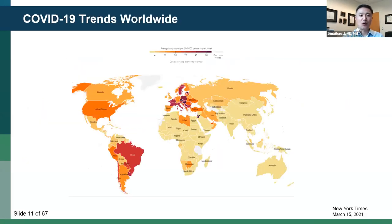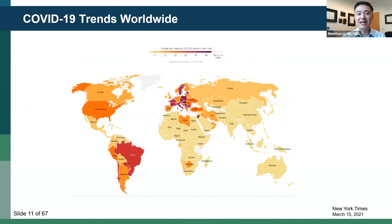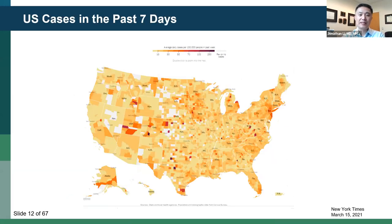COVID-19 trends worldwide: we are at the point of the epidemic where we've got 120 million cases and 2.5 million deaths already. This figure shows the number of daily cases per 100,000 in the past week, and you can see the pandemic is still raging out of control in multiple parts of the world, including Europe, South America, and some parts of the US. In the US, we now have 30 million cases and over half a million deaths, with hotspots still in the Midwest, some on the East Coast, and in the South.